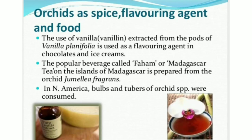Orchids as spice, flavoring agent and food: Vanillin extracted from the pods of Vanilla planifolia is used as a flavoring agent in chocolates and ice creams. The popular beverage called Faham or Madagascar tea on the islands of Madagascar is prepared from the orchid Jumellea fragrans. In North America, bulbs and tubers of several species of orchids were consumed.